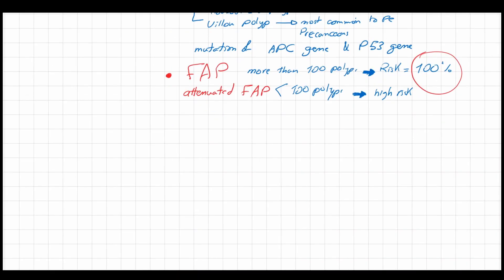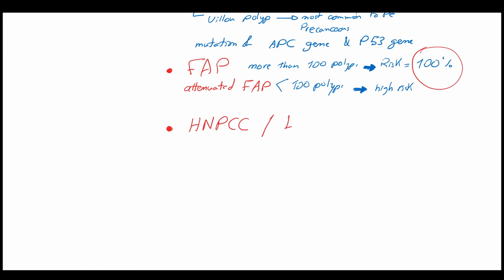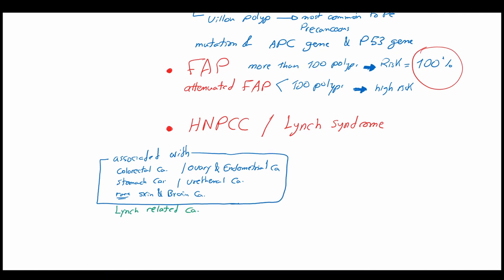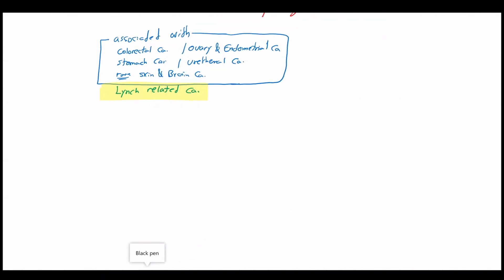The last variation is the hereditary non-polyposis colorectal carcinoma also known as the Lynch syndrome. Lynch syndrome carcinoma is usually associated with other carcinomas like ovary and endometrial carcinomas, stomach carcinoma, ureteral carcinoma, and rarely skin and brain carcinomas. This familial type of colorectal carcinoma represents about 3% of all colorectal carcinomas.